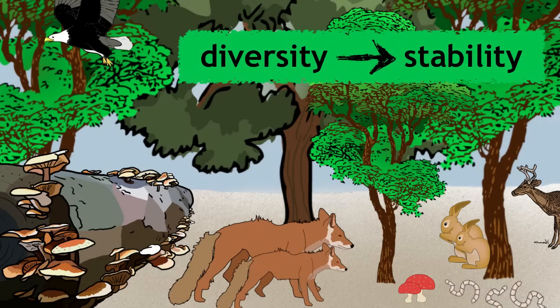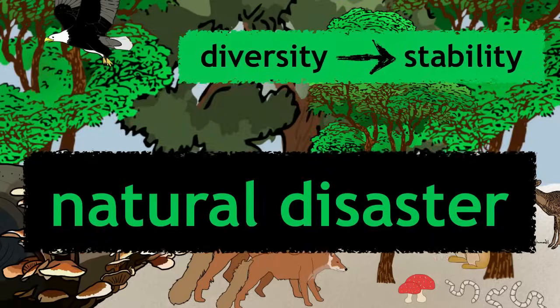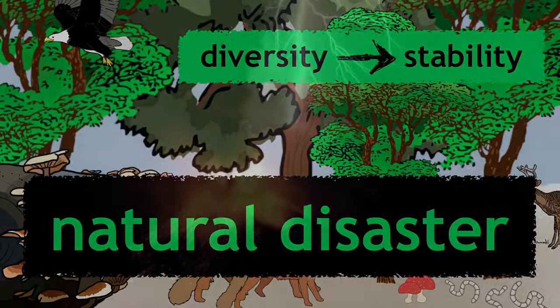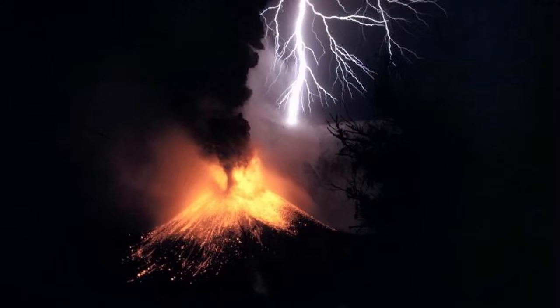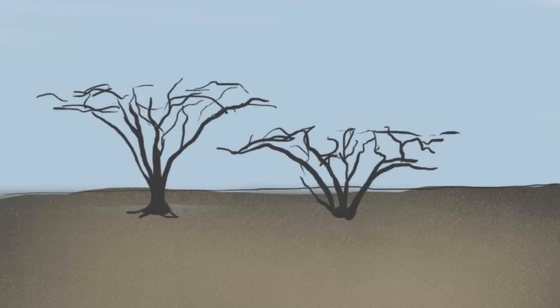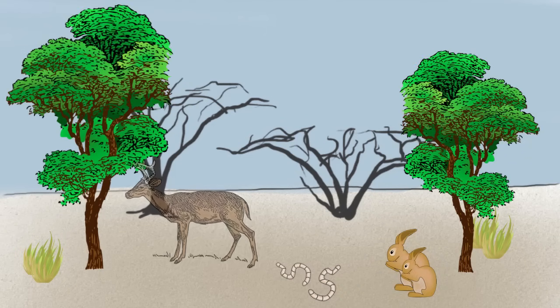Sometimes the only event that will alter these ecosystems is a natural disaster, such as an earthquake, a volcanic eruption, or even a large-scale fire. Worry not, though — ecosystems recover over time.